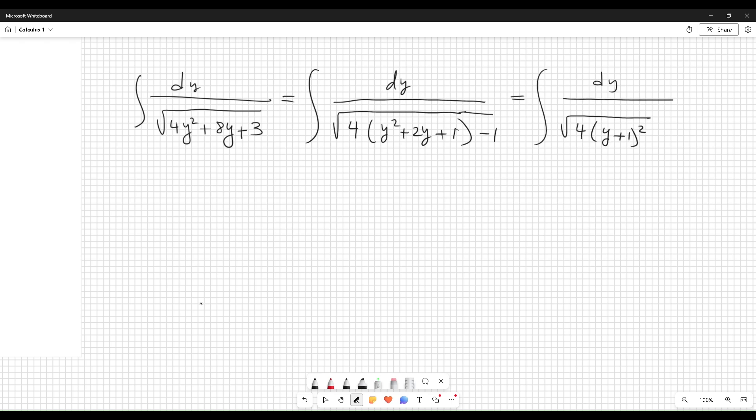Everything inside the square root - you can write it like that, or you can write it like this. Look: dy over 2 times the square root of (y plus 1) squared minus 1.